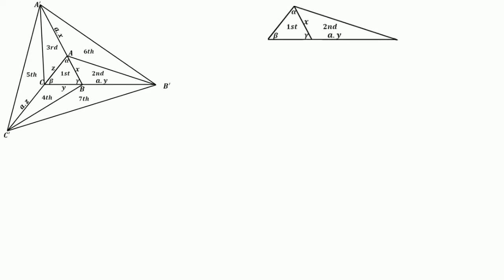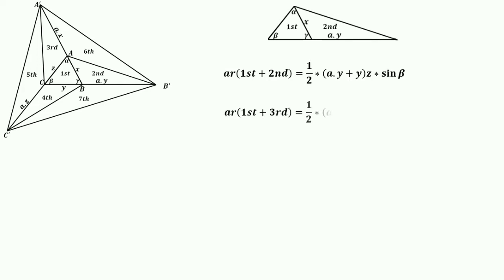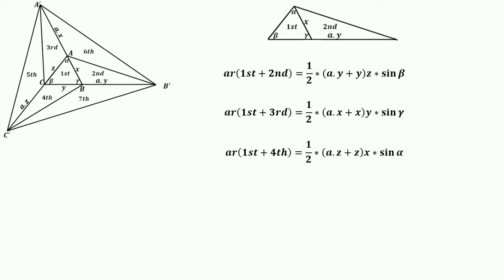Looking at triangle AB'C, taking angle β, the area of regions 1+2 equals ½·(ay + y)·z·sin(β). Similarly, the area of regions 1+3 equals ½·(ax + x)·y·sin(γ). And the area of regions 1+4 equals ½·(az + z)·x·sin(α).